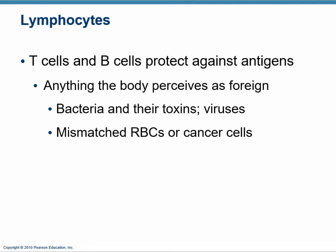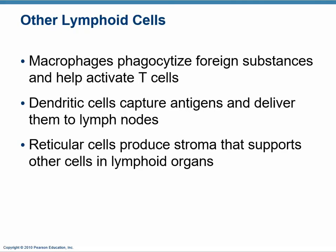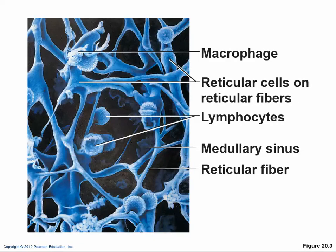Lymphocytes attack blood cells, cancer cells — anything that's not right. We'll talk about them in great detail later. There are also macrophages; they phagocytize and clean up, they're involved with immune activation and cleaning up debris. Having them especially in the lymph nodes is a good thing. There are also dendritic cells, which are involved with capturing antigens, and reticular cells that help make the space in lymphoid tissue and lymphoid organs.